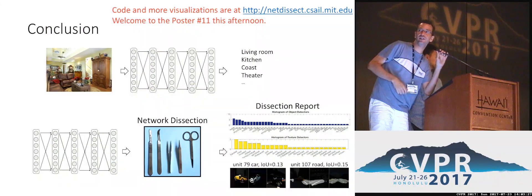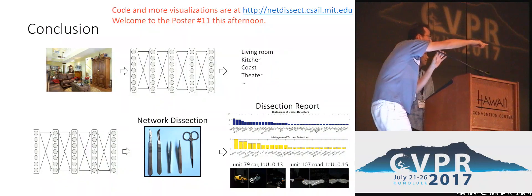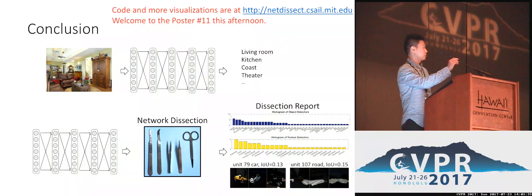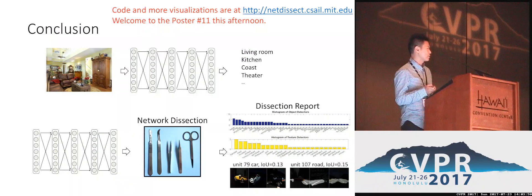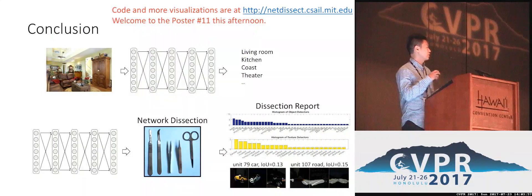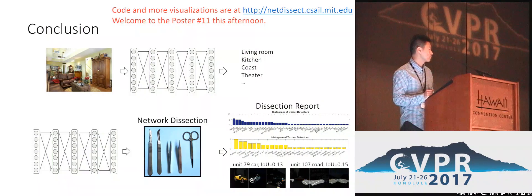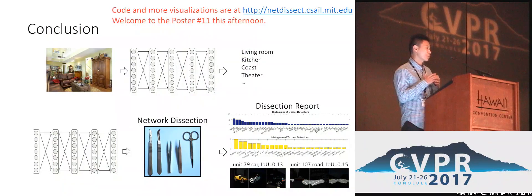We have time for a question. Question: This is nice work. I was wondering about units that didn't really have a unanimous decision on what they were detecting — units that maybe were not detecting individual parts? Response: About one third of units detect meaningful concepts. The other units may do some distributed coding on concepts in our dictionary. Our dictionary has 1,100 concepts, but some concepts may be outside our dictionary. Some units may be encoding pose or shape, which we don't have annotations for. In future work, we want to annotate more concepts to enrich our dictionary.